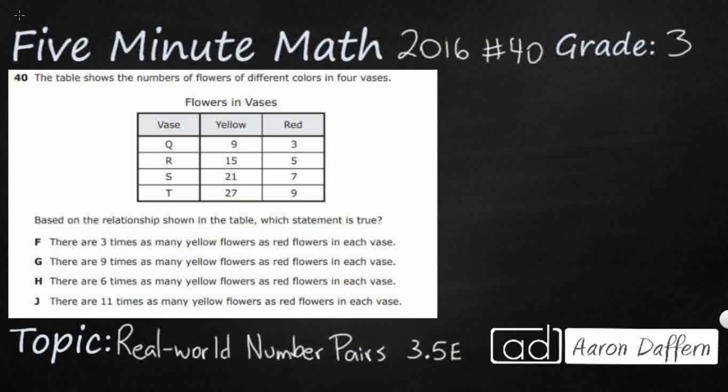So we've got a table here and it's got three columns, but this first column isn't really that important. It just gives you the fact that there are four different vases. The vase letters are Q, R, S, and T, but we don't really need that. Really what we're looking at is the relationship here between our yellow and our red flowers.